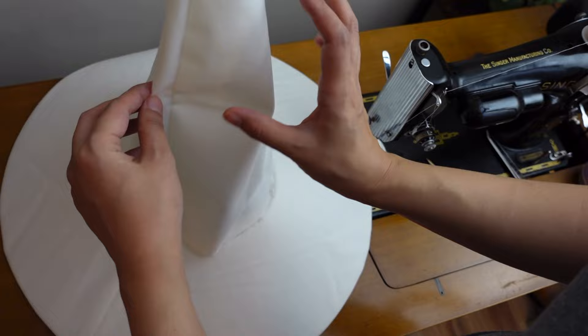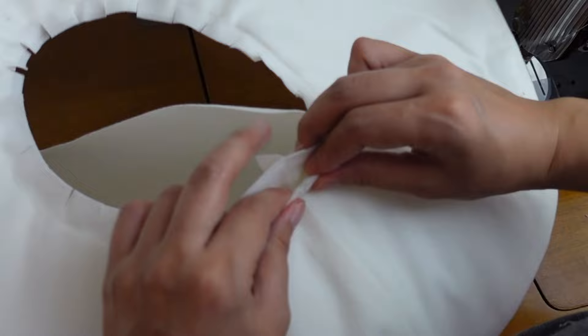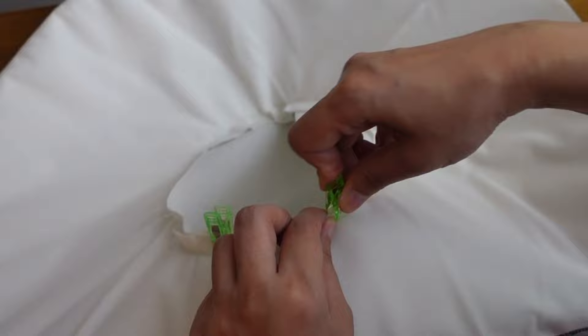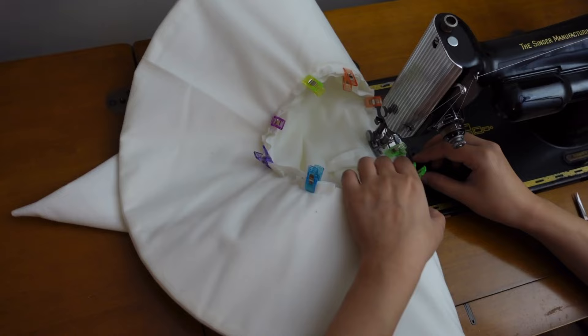Align the center back seams of the cone top and the brim and sew with half inch seam allowance.